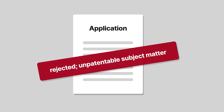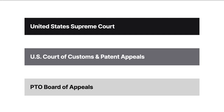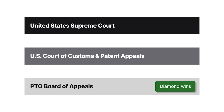The examiner from the Patent and Trademark Office, or PTO, ultimately rejected the patent application, concluding that Deere and Lutton sought patent protection for unpatentable subject matter under Section 101. The PTO Board of Appeals agreed. But the United States Court of Customs and Patent Appeals reversed, noting that a claimed process doesn't become unpatentable simply because it includes a mathematical formula or algorithm.